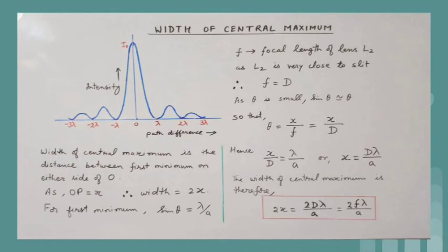Also, if F is the focal length of lens L2, which is held very close to the slit, then F is equal to capital D. Now, theta being a very small angle, sin theta can be taken as theta, so that theta equals x by F, also equal to x by capital D.